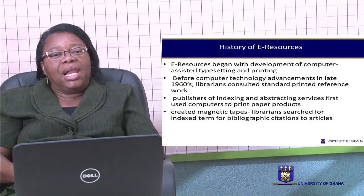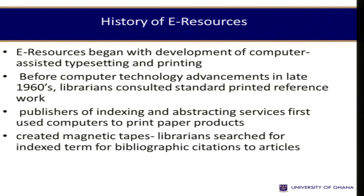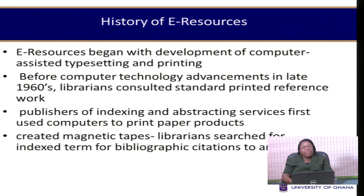How did electronic resources start? It began with the development of computer-assisted typesetting and printing. Before the computer technology advancement in the late 1960s, librarians consulted standard printed reference works. The publishers of indexing and abstracting services first used computers to print paper products, which were subsequently converted into magnetic tapes for librarians to search articles or citations required by users.